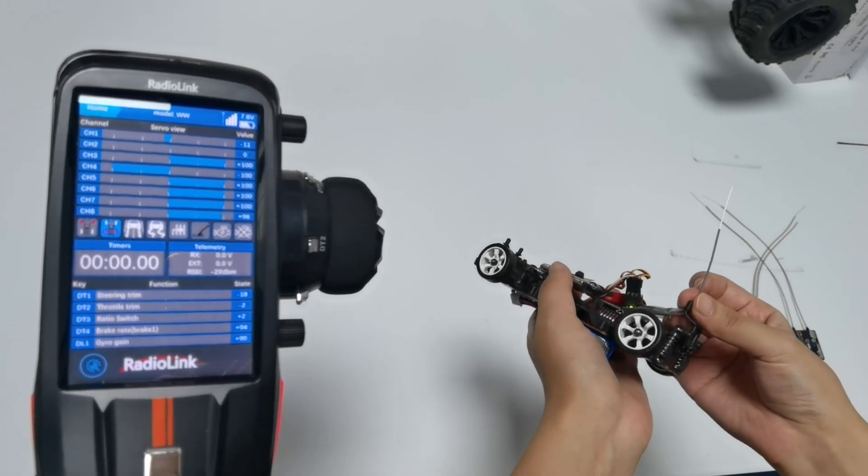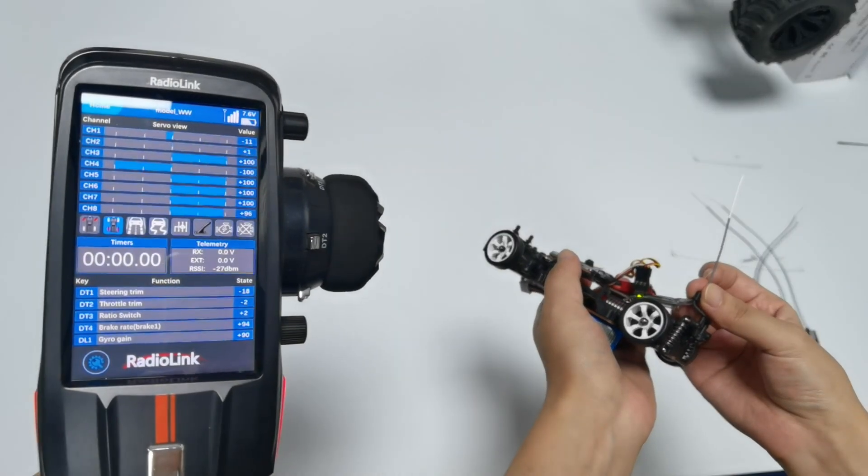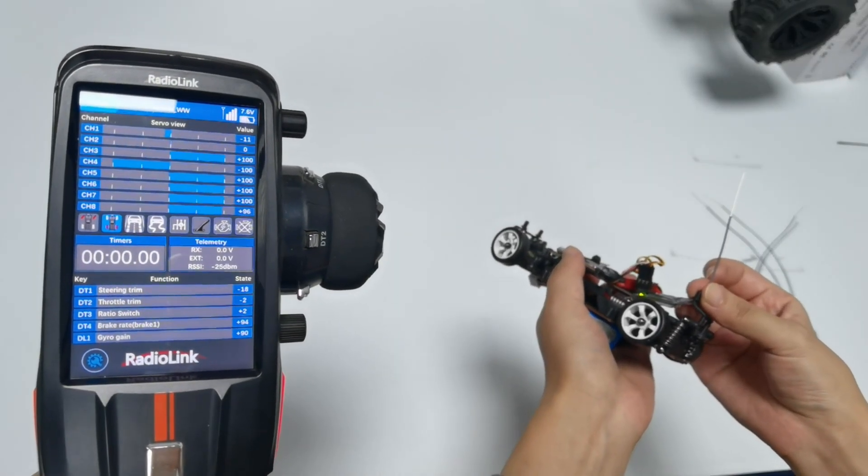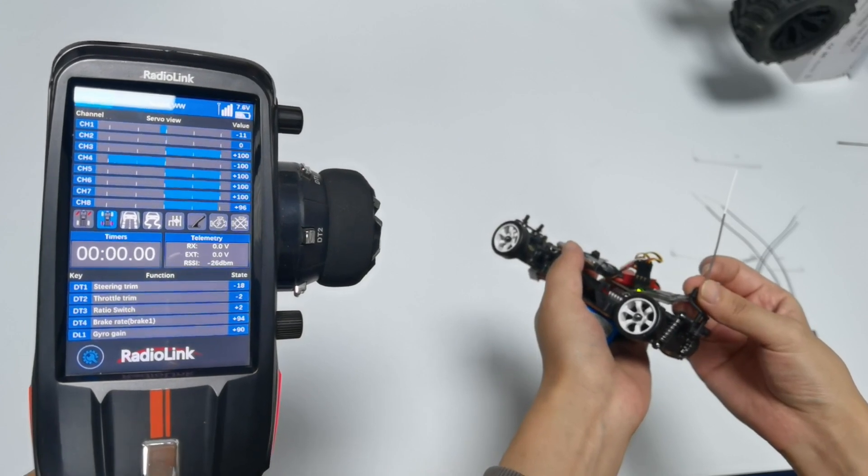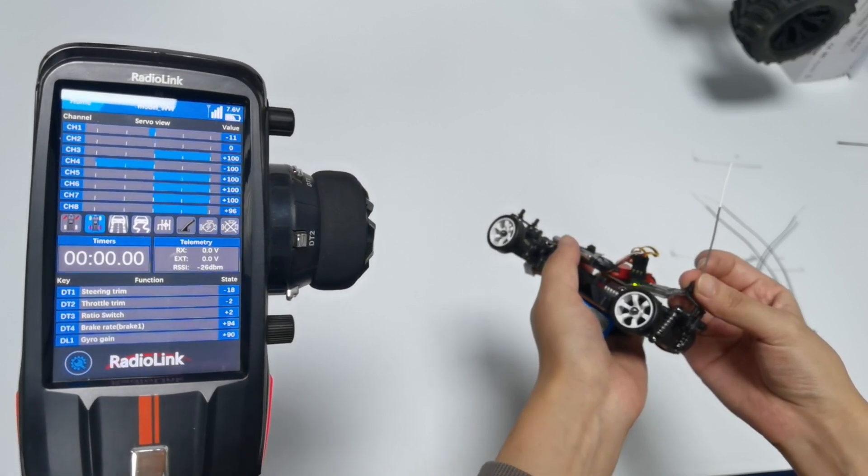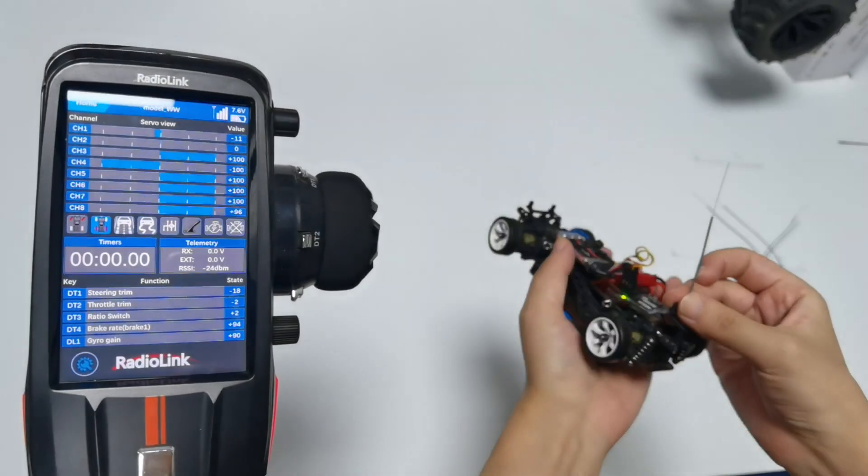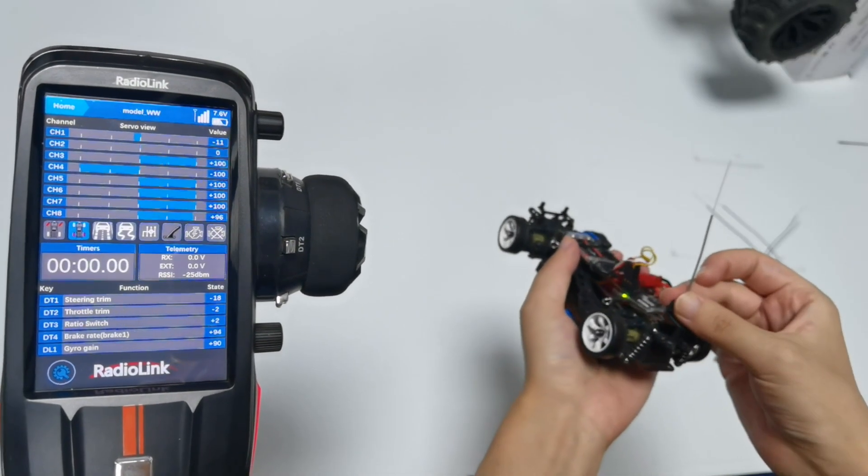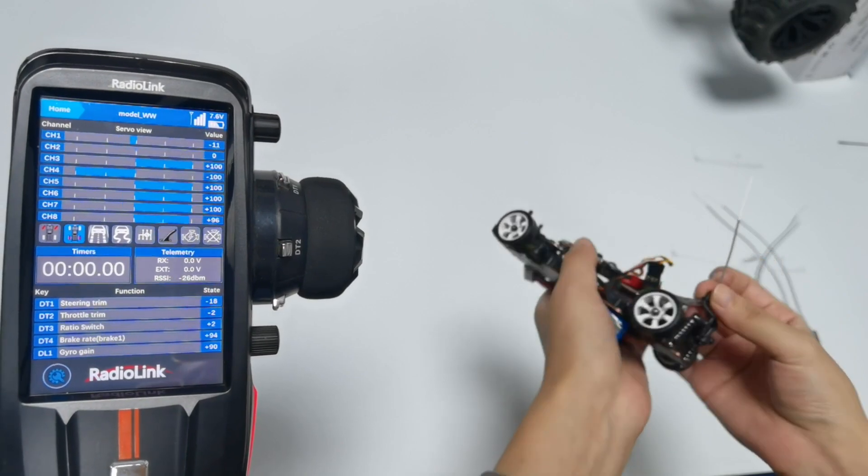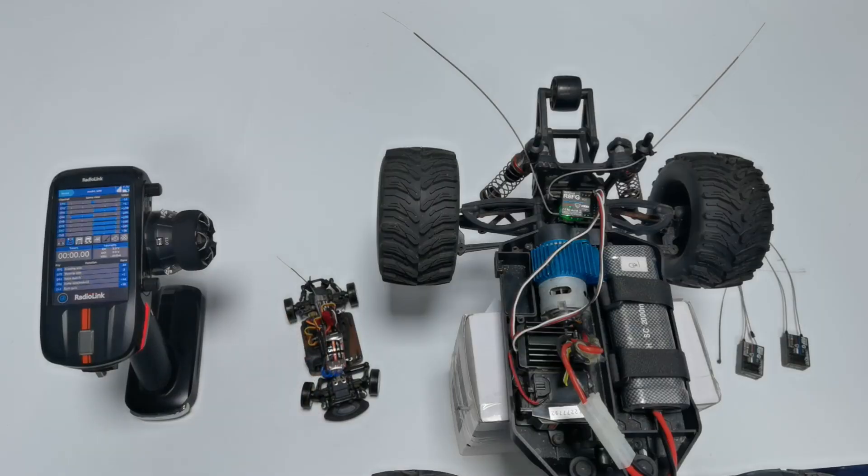But if now I put the antenna of R4FG vertically upward, the RSSI value is about minus 26 dBm, which means there is no problem with the RSSI value. So please do not keep the antenna receivers close to the metal parts on your car.